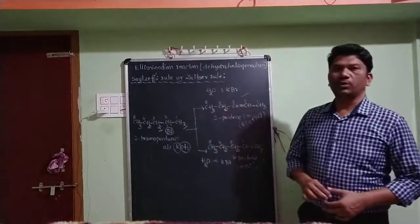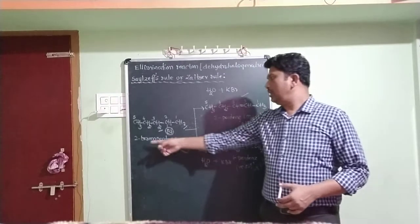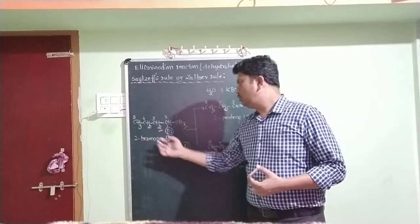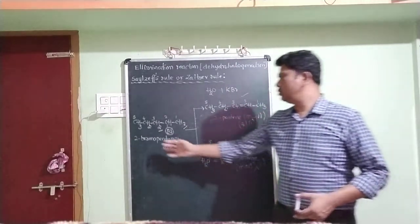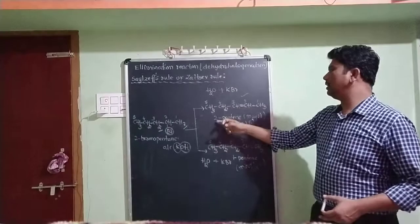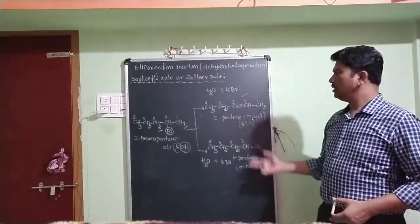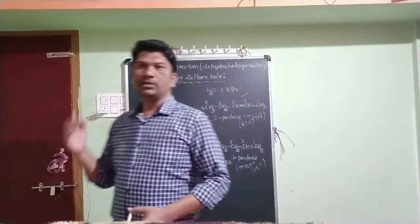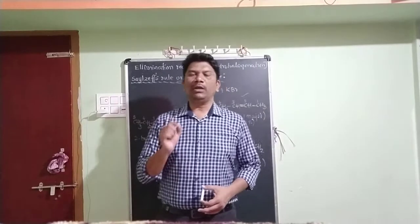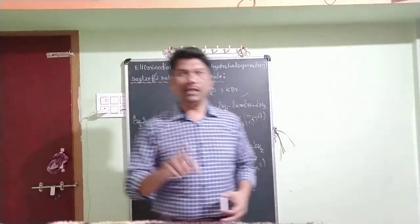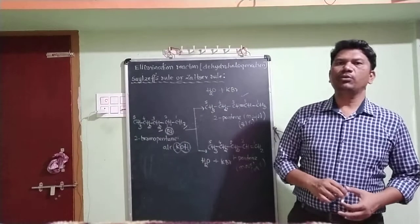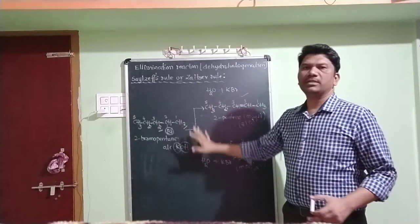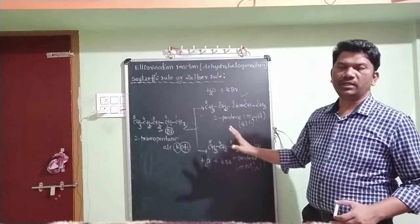This is a very important reaction and statement — most of the time in examinations they ask questions based on Saytzeff's rule. Here I took 2-bromopentane as an example; if the question uses 2-bromobutane, you would get 2-butene as the major product and 1-butene as the minor product. The key statement: if dehydrohalogenation of a haloalkene can yield more than one alkene, the major alkene will be the highly substituted alkene.